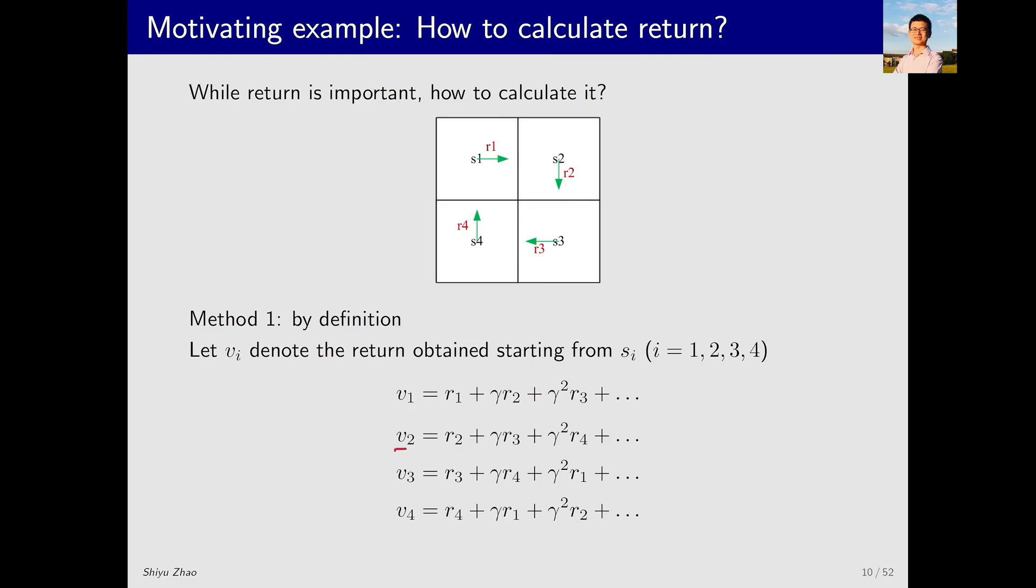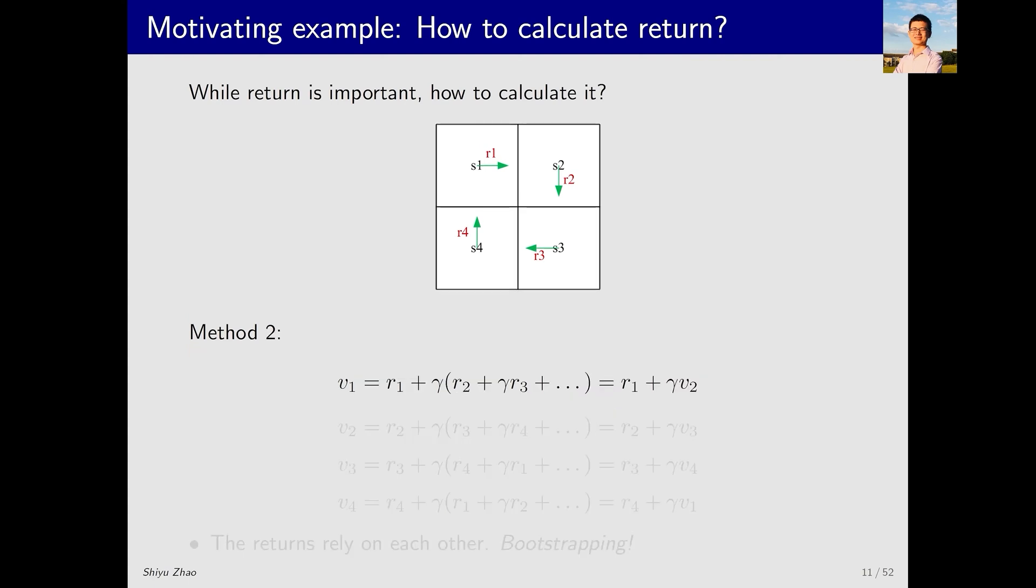Similarly, for V2, it starts with R2, followed by gamma R3, then gamma squared R4, and so on. The calculation of subsequent returns can be easily calculated in this way.